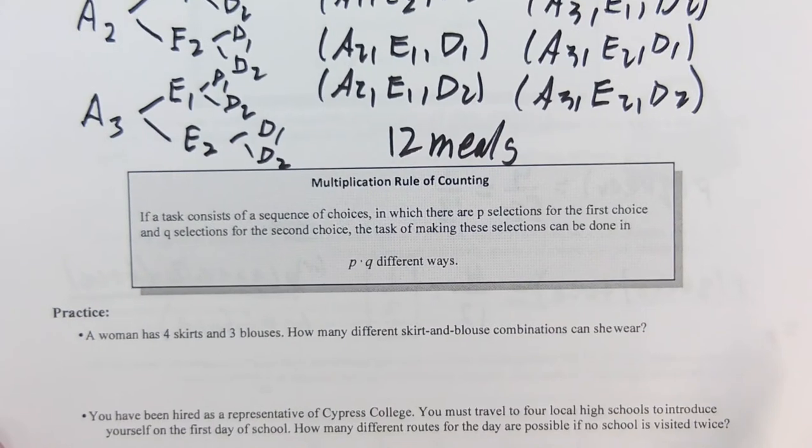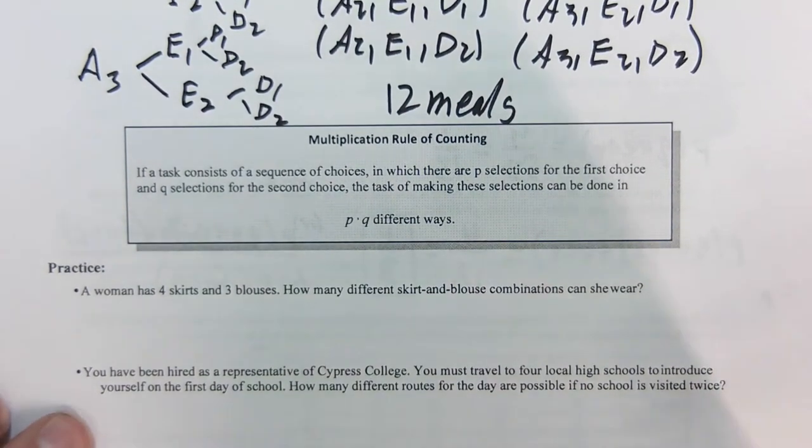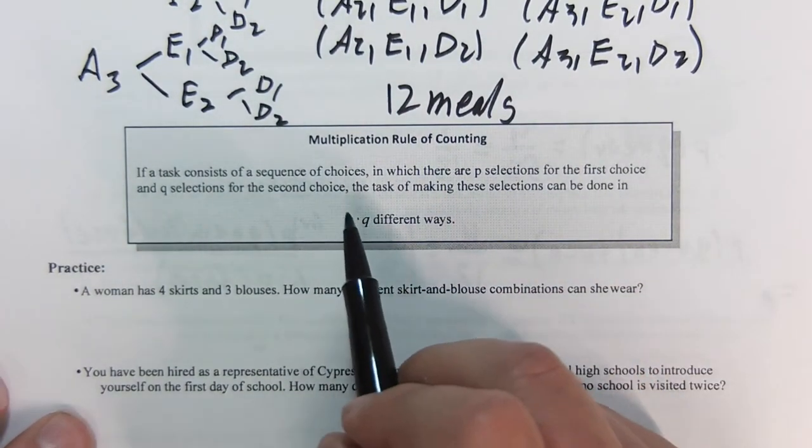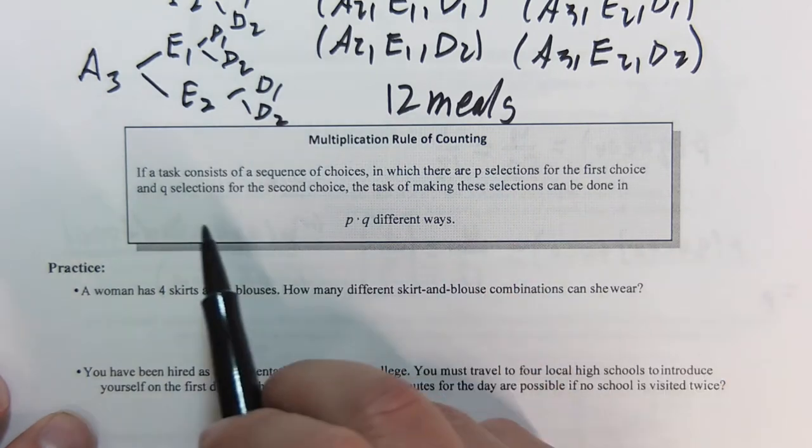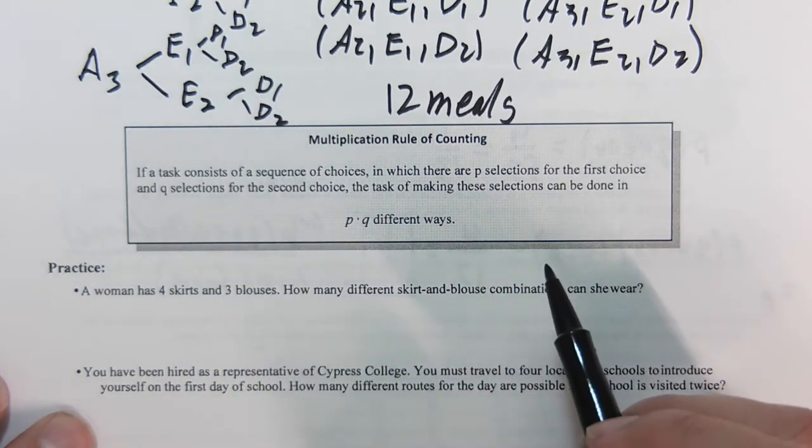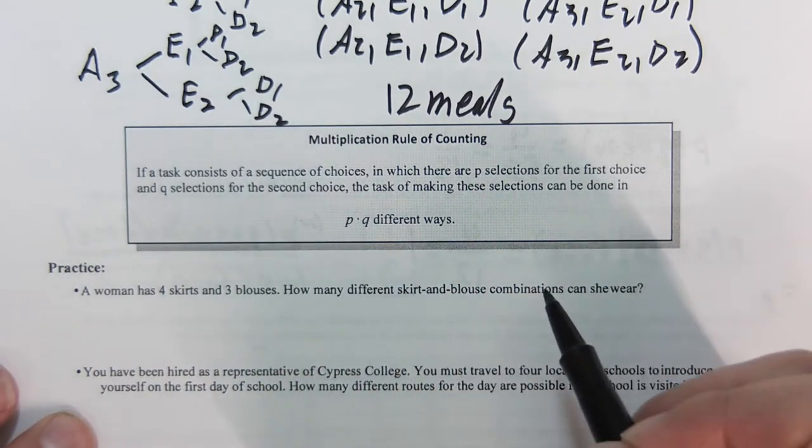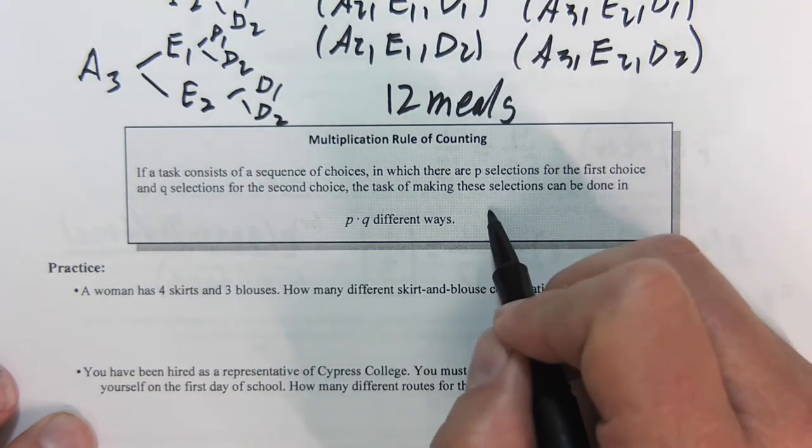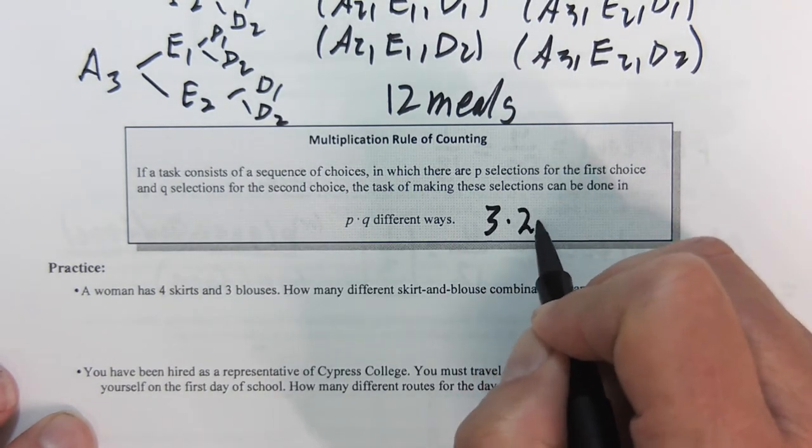That brings us to the multiplication rule of counting. When we have p selections and q selections, and the two are independent of one another, then we just multiply them together. So in this case, that's going to be 3 times 2 times 2.